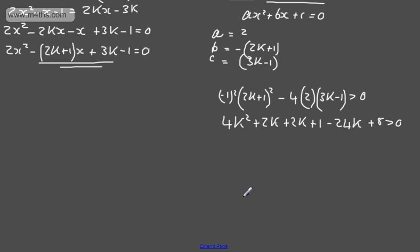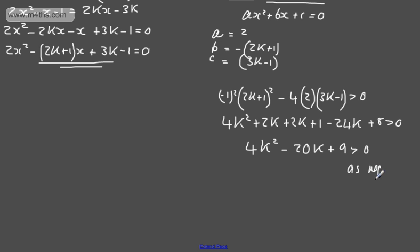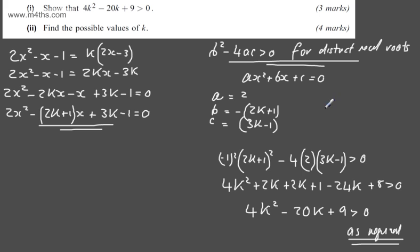Tidying up the quadratic in k: 4k squared, then plus 2k plus 2k minus 24k gives minus 20k, and plus 1 plus 8 gives plus 9. So 4k squared minus 20k plus 9 is greater than 0, as required. All we've done is identify a, b, and c, then state that b squared minus 4ac is greater than 0 for distinct real roots.